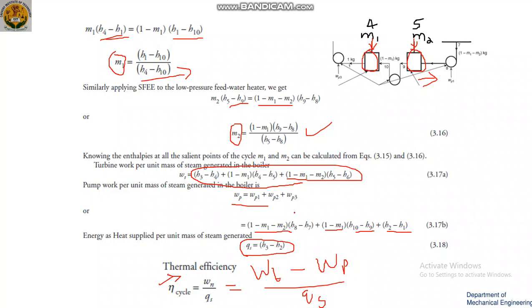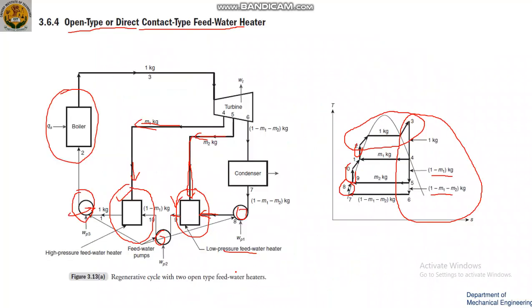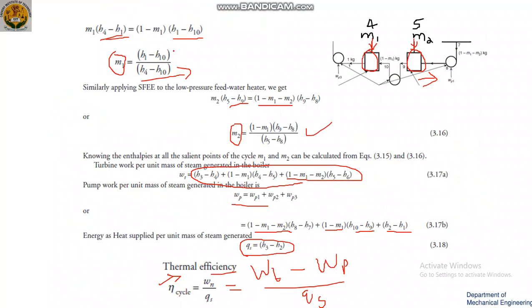Substituting the two equations gives the thermal efficiency of the open feed water heater. That's all for today. In the next class, we will see the closed type feed water heater.